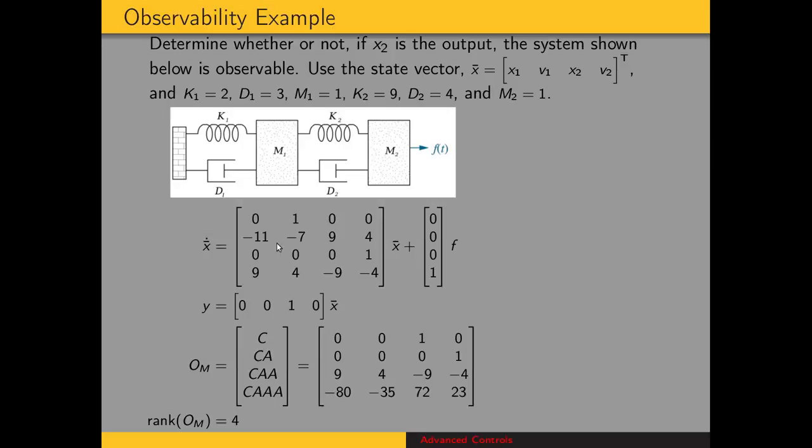Here is our state equation. We have a state matrix that is not diagonal. So there is coupling between the state variables. An input vector and an output vector.